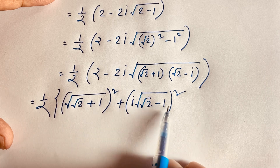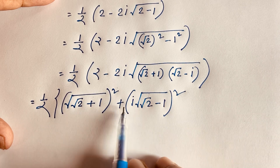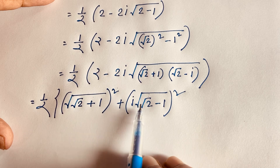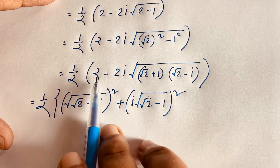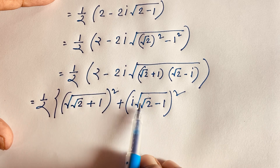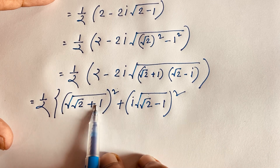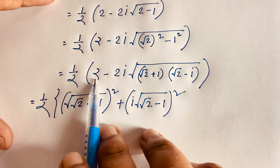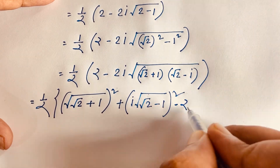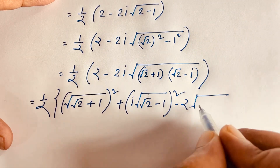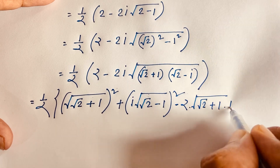Here i squared equals minus 1, so plus minus becomes minus, and minus minus becomes plus. So 1 plus 1 equals 2, and √2 minus √2 cancels, giving us 2.